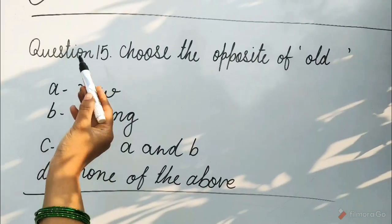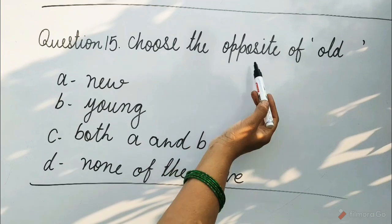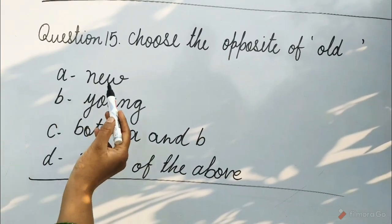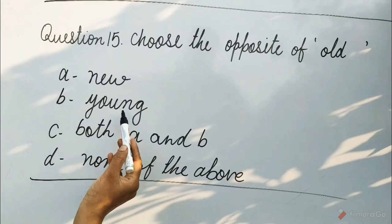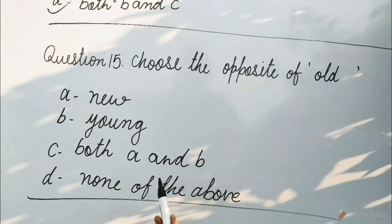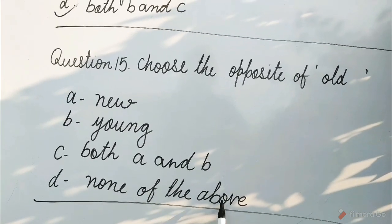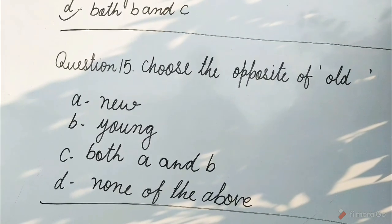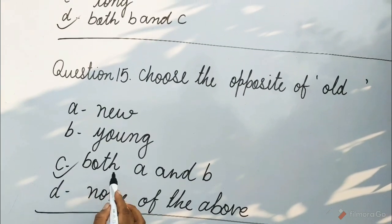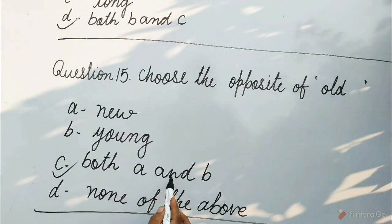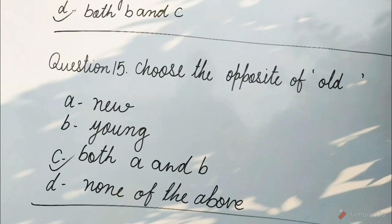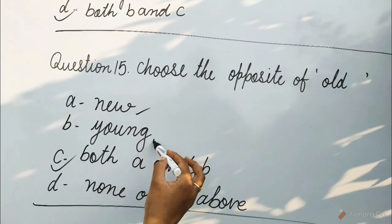Question 15: Choose the opposite of old. Options are A. New, B. Young, C. Both A and B, D. None of the above. Guess children, which option will be correct? Yes, it is C — Both A and B. Because the opposite of old is new and young.